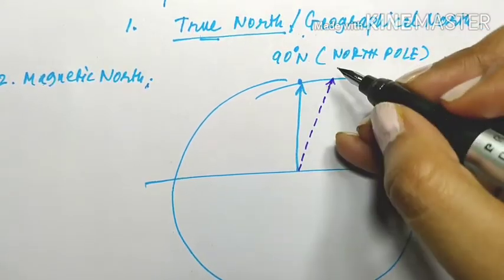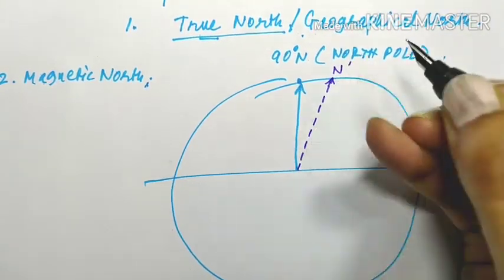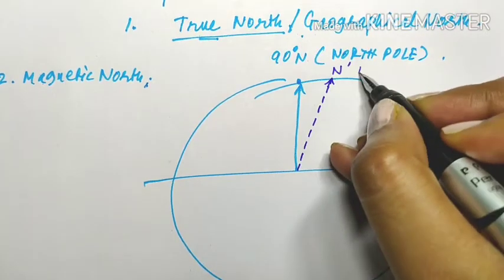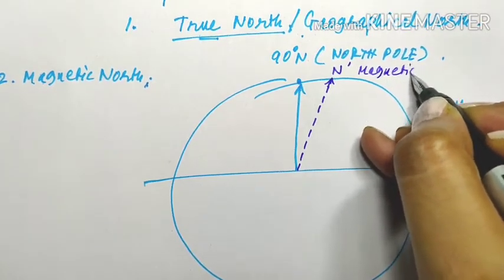This is another north shown by the prismatic compass. This north is known as magnetic north.